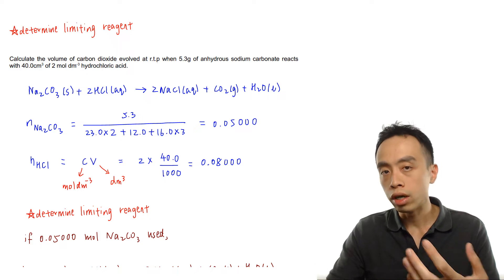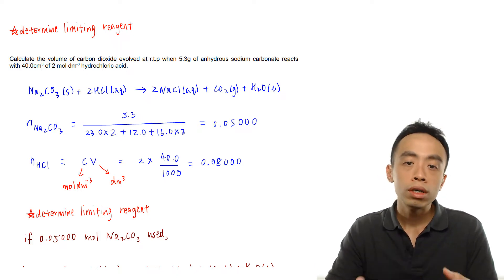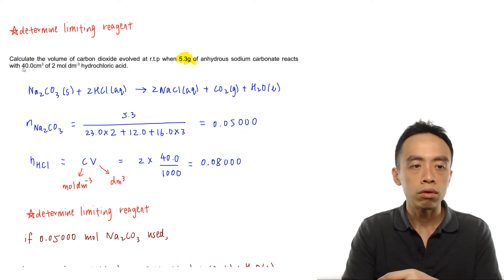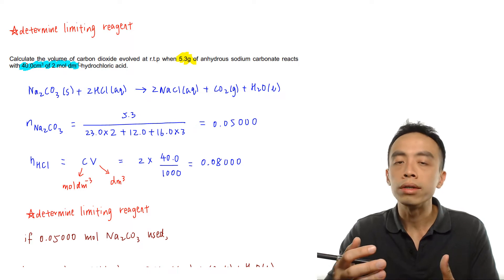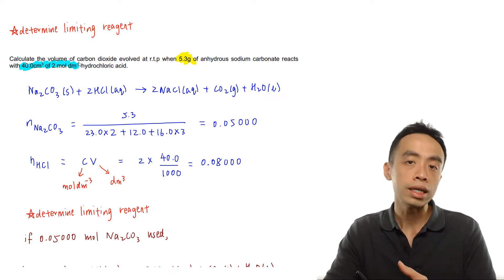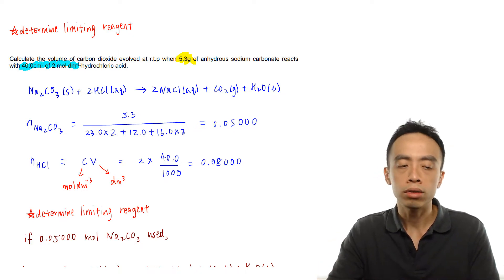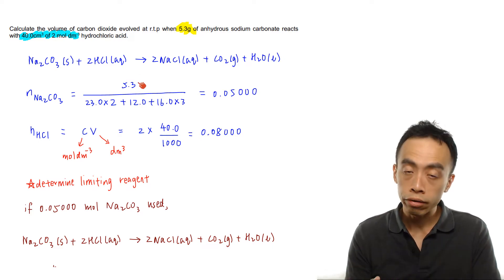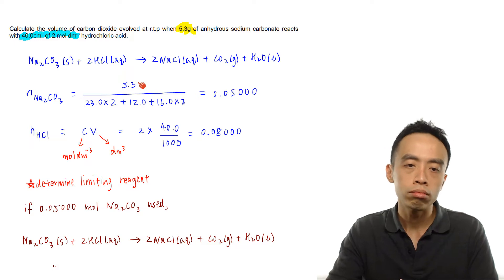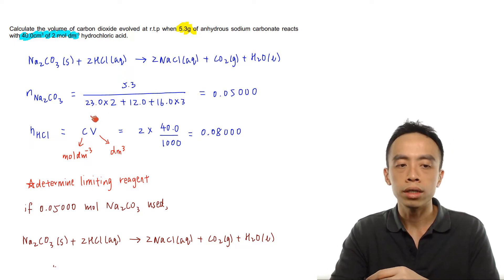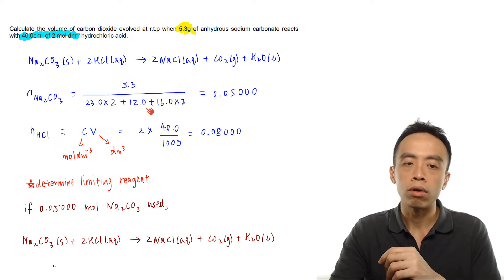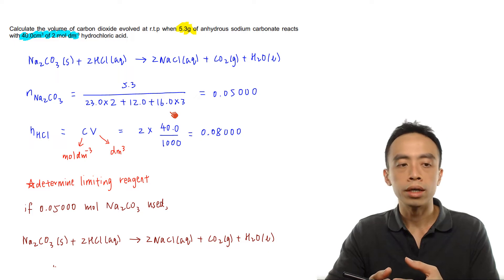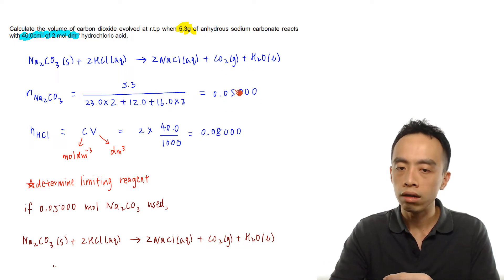Given the mass of sodium carbonate, we can determine its number of moles, and given the volume and concentration of HCl, we can determine the moles of HCl. The number of moles of Na₂CO₃ is mass divided by molar mass. The molar mass of Na₂CO₃ is (23.0 × 2) + 12.0 + (16.0 × 3). Working this out gives 0.05000 moles of sodium carbonate.